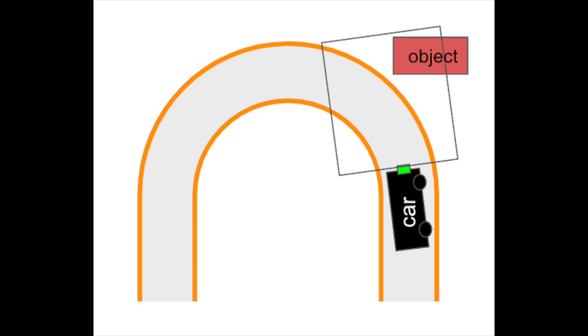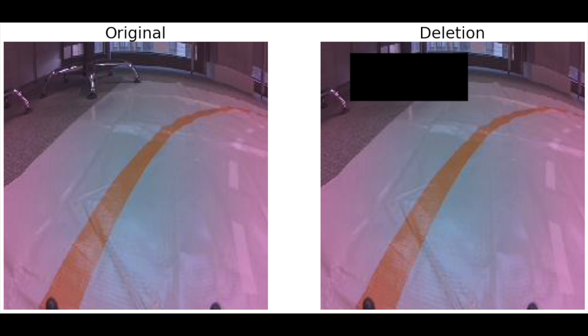Deletion can help produce a more robust model in a different way to the previous two methods. When making predictions, a model could focus on a particular feature or aspect of the image — for example, our model could only use the outer orange lane to make predictions. By deleting large chunks, we force the model to use multiple features. You could also take a more systematic approach: suppose an object such as a chair is in the background of all our training images, and as a result the model associates this object with the prediction to turn right. We can try to break this association by deleting the chair in the background of some of our training images, although this process may be just as time consuming as going out and collecting new data.